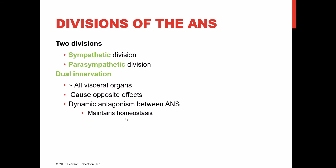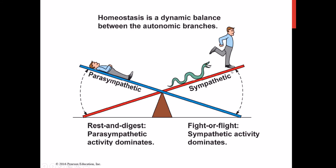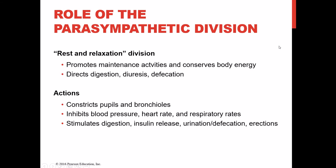The sympathetic division is known as the fight-or-flight branch — it takes over in stressful situations. The parasympathetic system is known as the rest-and-digest division, dominating after we've eaten and when we're relaxed. Think of a balance beam demonstrating this dynamic antagonism: if the sympathetic causes an increase in something, the parasympathetic is likely to cause a decrease in that same component — a back-and-forth balance between these two competing branches.